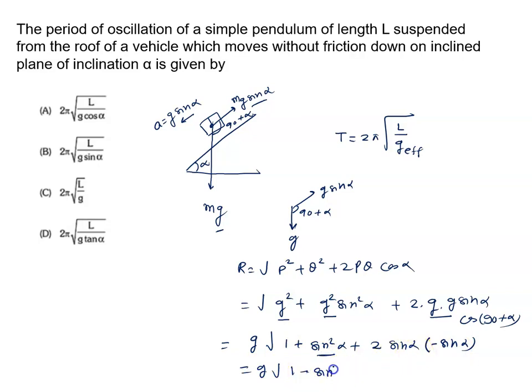1 minus sin square alpha is cos square alpha. Square root of cos square alpha is cos alpha. The effective gravity is g cos alpha.